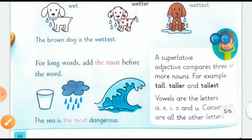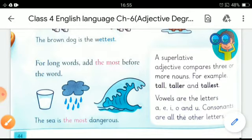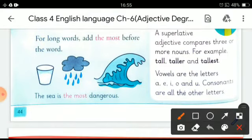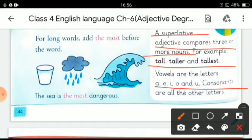For long words, we add 'the most' before the word — for example, 'the sea is the most dangerous.' To revise once more: a superlative degree compares three or more nouns, as in tall, taller, tallest. Vowels are the letters A, E, I, O, U, and consonants are all the other letters. That's all for this chapter.